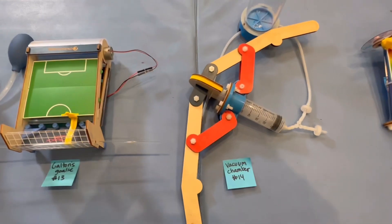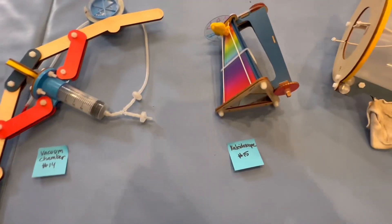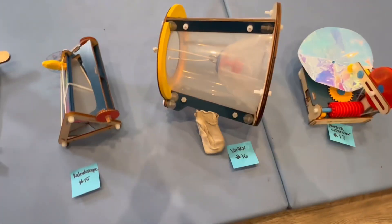Then they moved on to the bell curve with the Galton's goalie. The vacuum with the vacuum chamber. The kaleidoscope was the light spectrum.